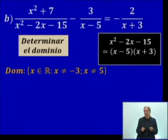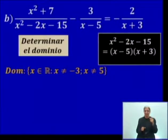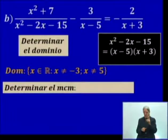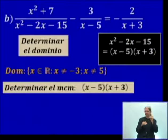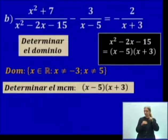Los valores que no puede tomar la variable son menos 3 y 5. Entonces, ¿qué vamos a hacer ahora? Vamos a hallar el mínimo común múltiplo. Ya ustedes deben conocer eso.